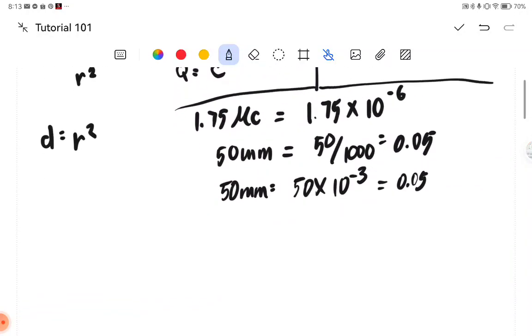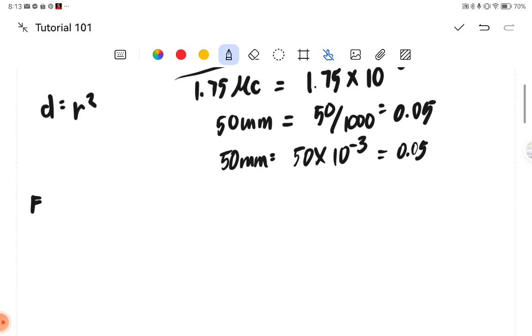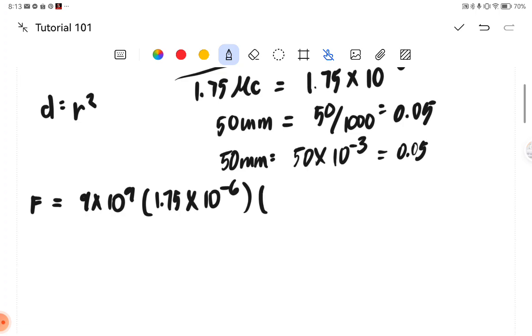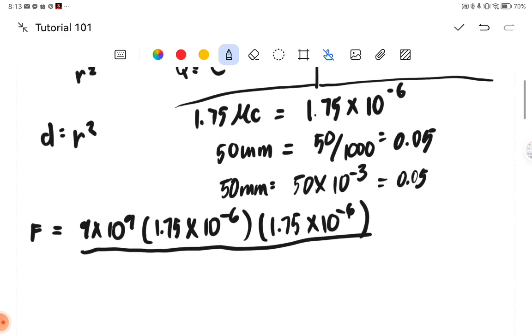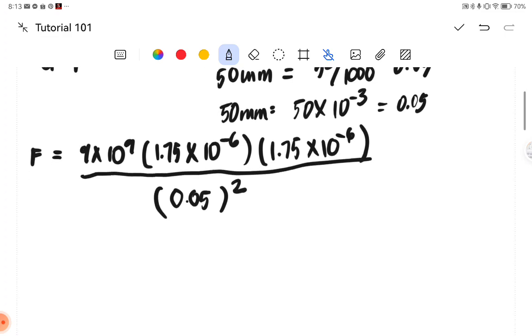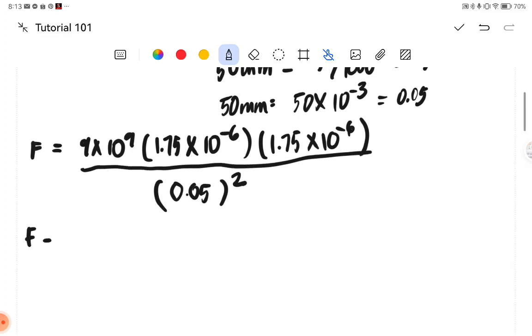We have here F is equivalent to K, which is 9 times 10 raised to 9 multiplied by 1.75 times 10 raised to negative 6. Our Q1, which is identical to the Q2, which is 1.75 times 10 raised to negative 6, all over the value of our R squared, which is 0.05 meter squared.